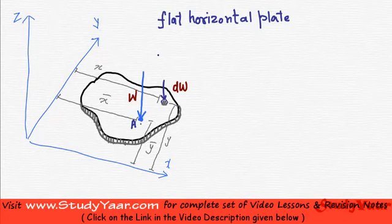So let us assume that the coordinates of this element is x, y and the coordinates where the center of gravity exists, point A, is x bar, y bar. We are going to have many such small elements. All throughout this body we are going to have many such small elements.